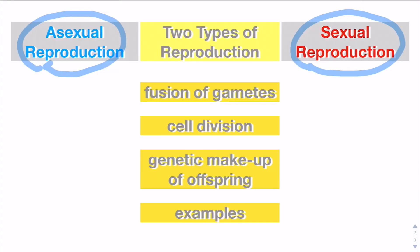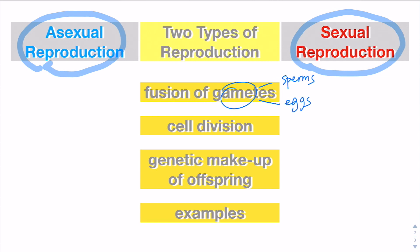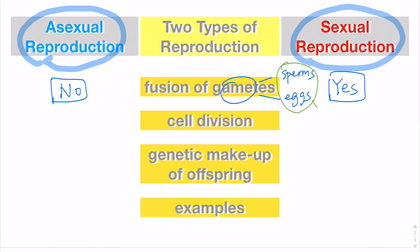The key difference between these two types of reproduction is whether the reproduction involves the fusion of gametes, like sperms and eggs. For sexual reproduction, fusion of gametes is necessary, while for asexual reproduction, fusion of gametes is not necessary.